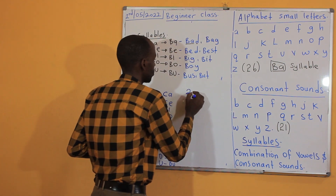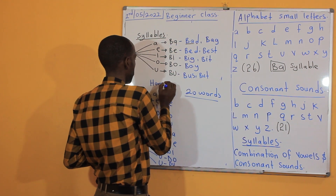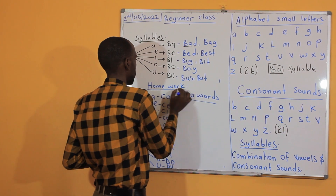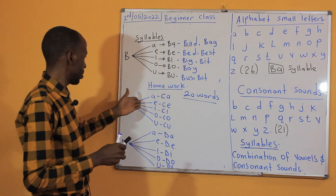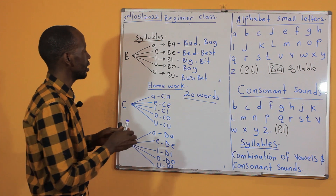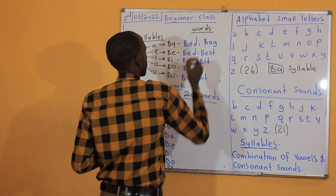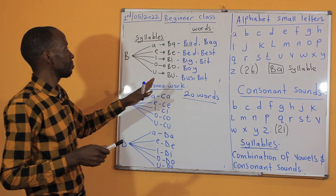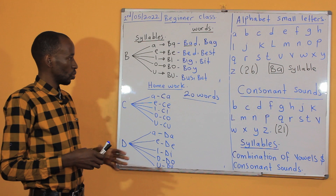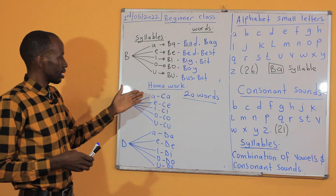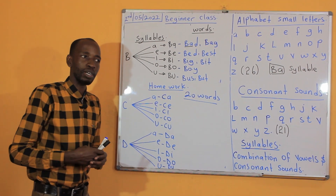Make 20 words. This is homework. In your free time, try to do what I have done here — think about how you can make other words, combining syllables plus consonant sounds. You make 20 words using consonant sounds and syllable sounds combined.